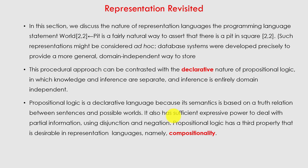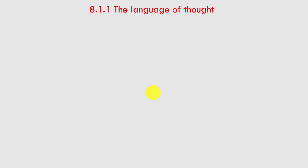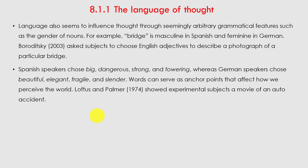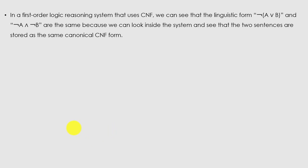Next is the language of thought. Language also seems to influence thought through seemingly arbitrary grammatical features, such as gender of nouns. For example, the word 'bridge' is masculine in Spanish and feminine in German. Spanish speakers tend to choose words like big, dangerous, strong, and towering, whereas German speakers choose beautiful, elegant, fragile, and slender. Thus words can serve as anchor points that affect how we perceive the world.